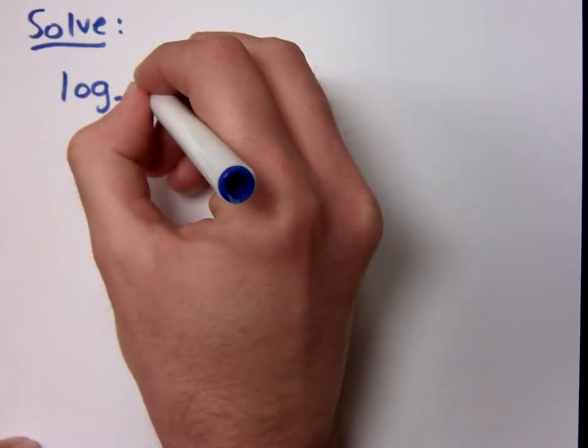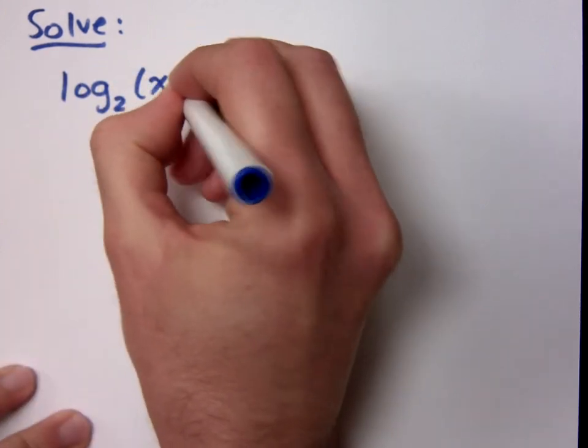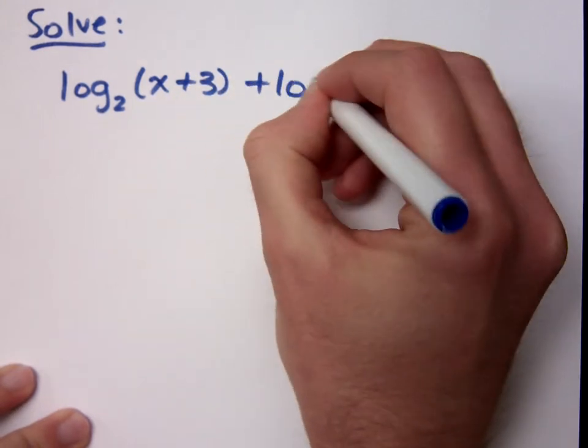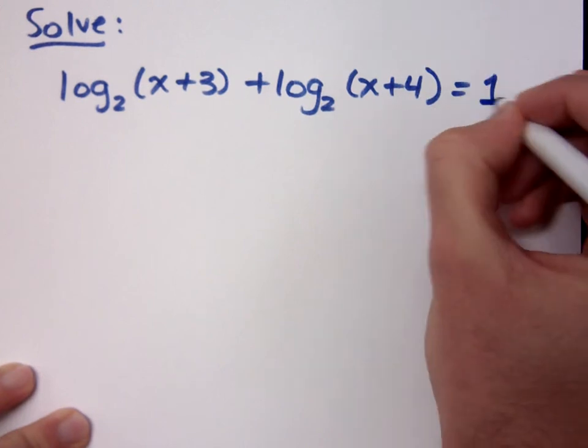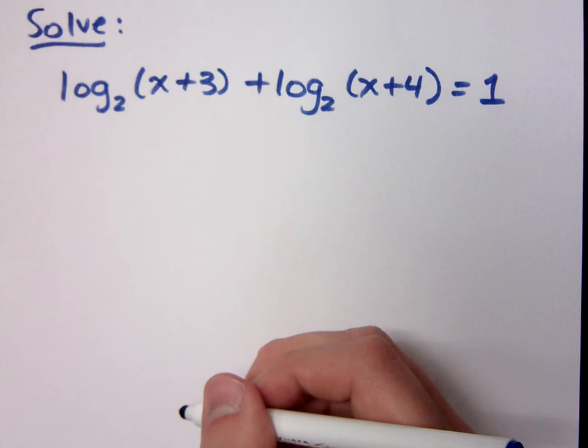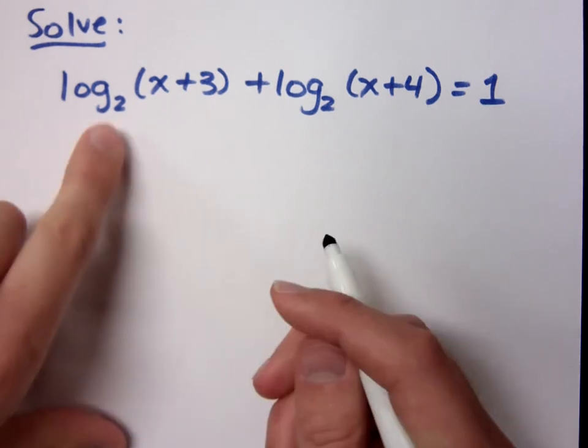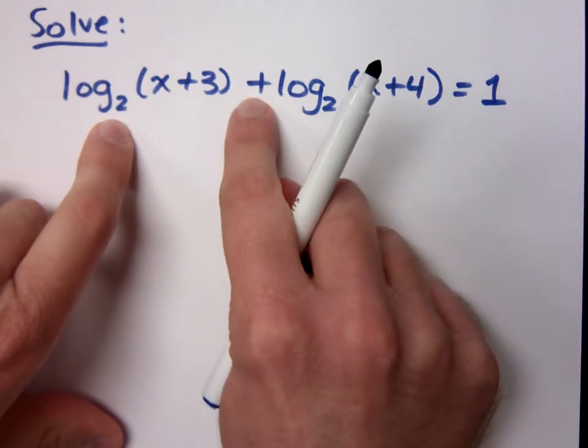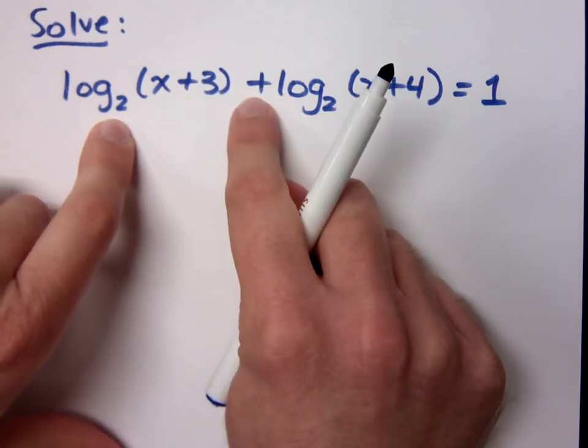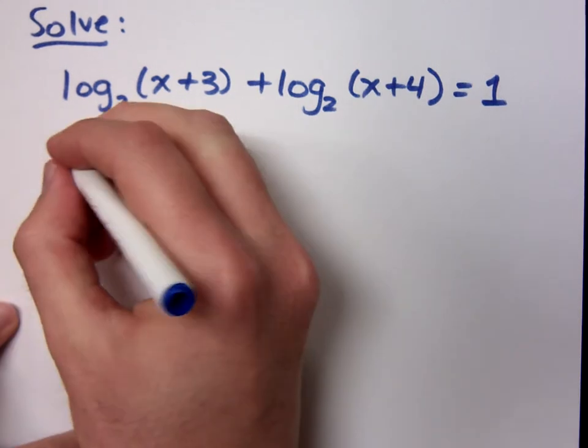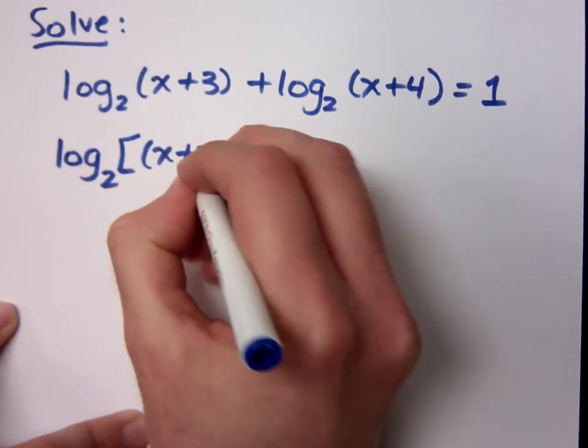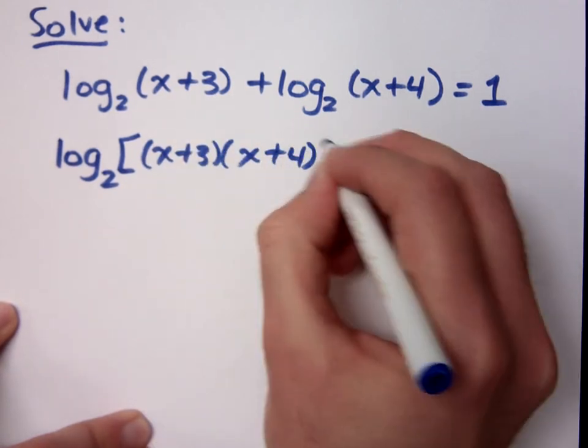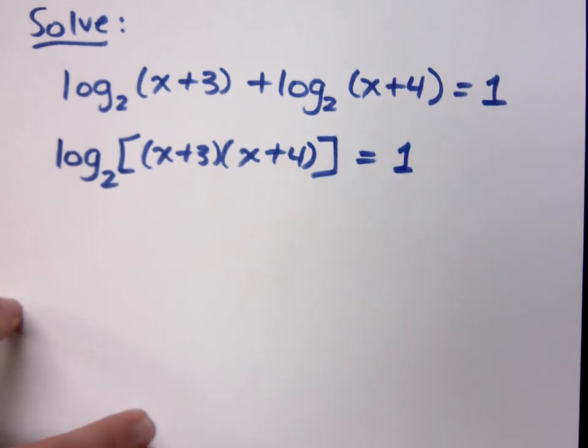Let's see some fun. If I look at this logarithmic equation right here, one of the things I want us to note is that we do have the same base for these logs. And since it's addition, that means I can do what with their insides? That can become multiplication. So log with base 2 of the product of x plus 3 times x plus 4, and that equals 1.